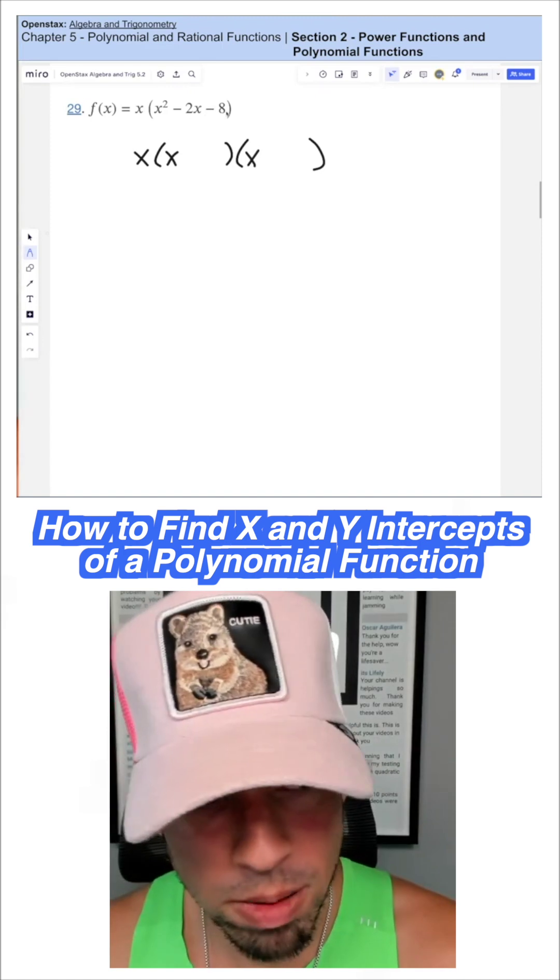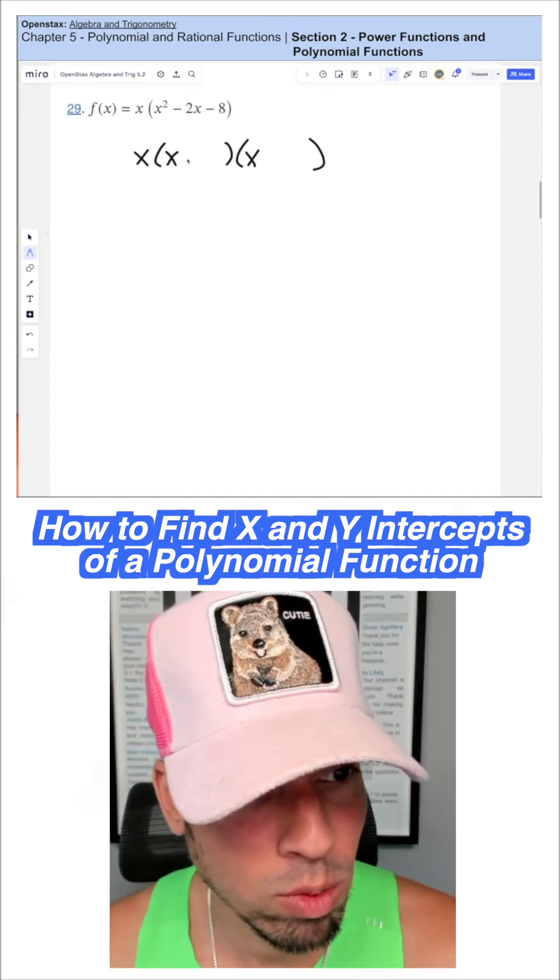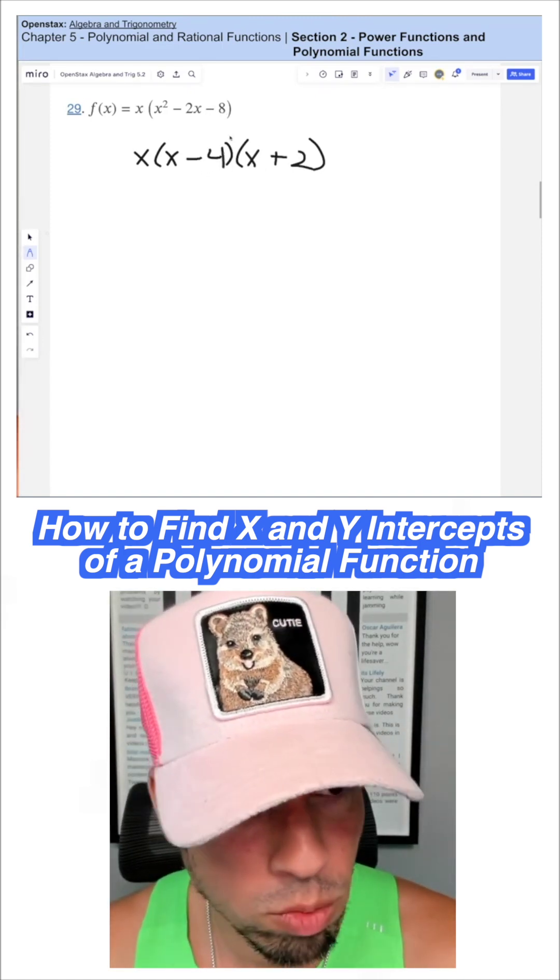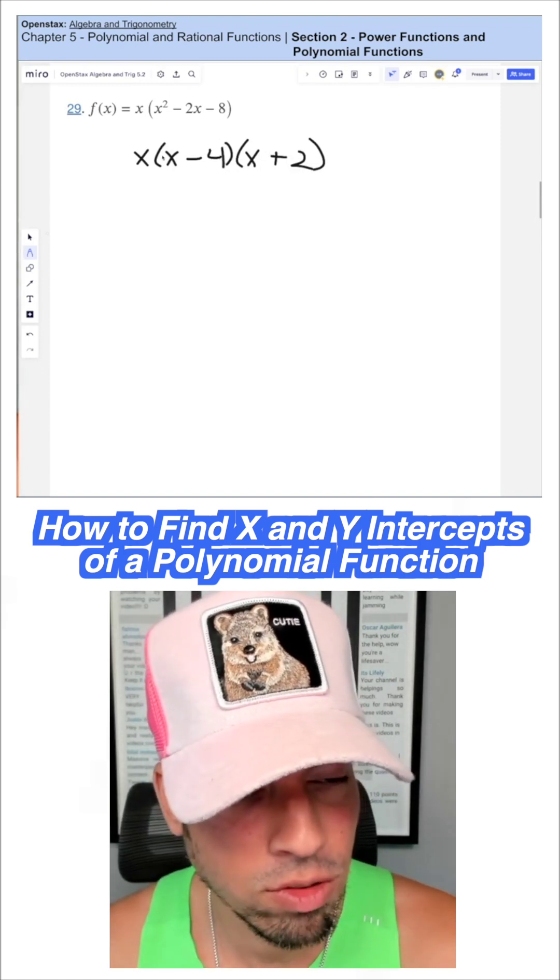What two numbers multiply to negative 8, add to negative 2? That would be negative 4 and positive 2. Multiply to negative 8, add to negative 2.